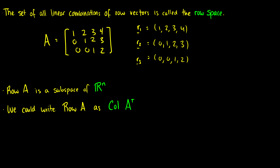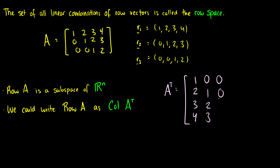Another way we could do this is we could just take the transpose. So for instance we have A transpose here. Our first row would become our first column, our second row would become our second column, and our third row would become our third column. The row space is really just the column space of the transpose, so we can write row(A) as col(A transpose).